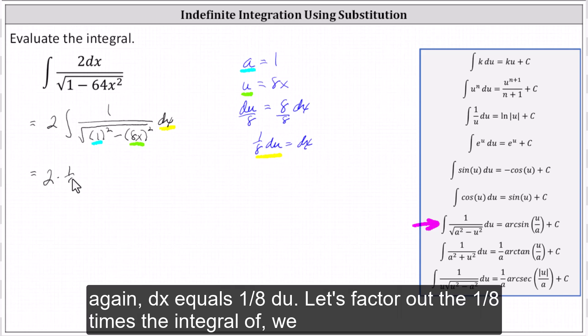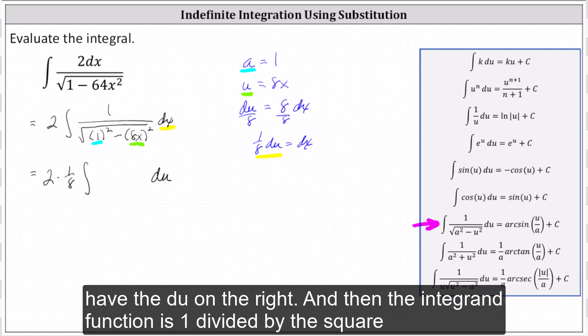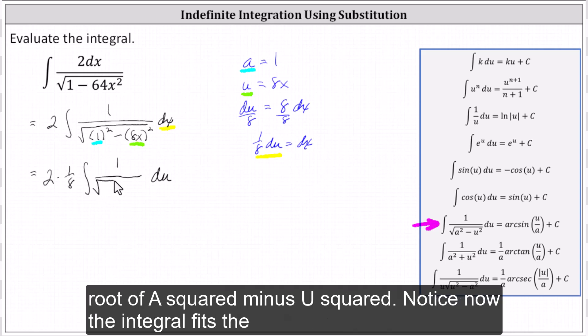Let's factor out the one-eighth times the integral. We have the du on the right, and then the integrand function is one divided by the square root of a squared minus u squared.